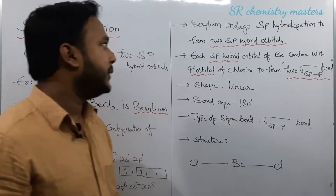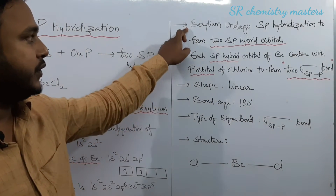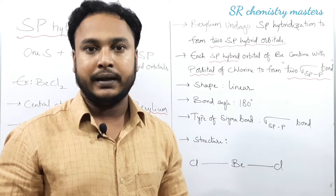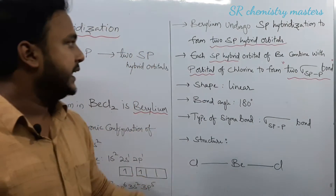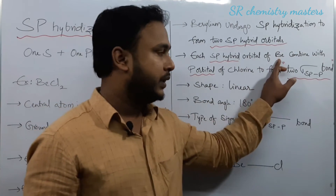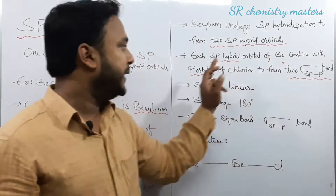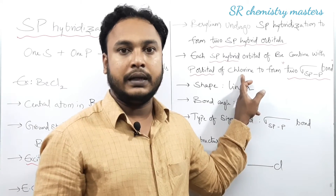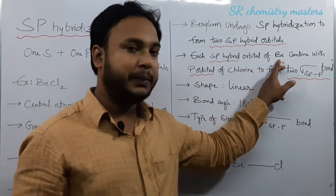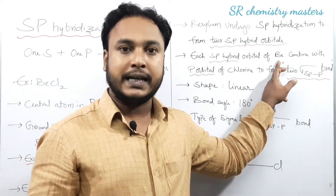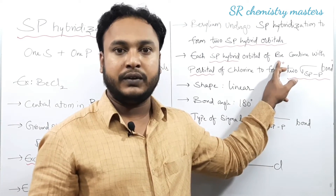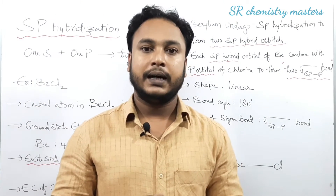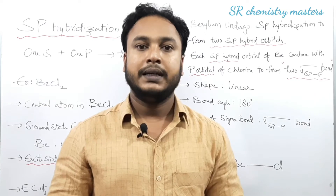Beryllium undergoes SP hybridization and forms two SP hybrid orbitals, each with an unpaired electron. Each SP hybrid orbital of beryllium combines with the p orbital of chlorine, which has an unpaired electron in its p orbital. These SP and p orbitals form sigma bonds — hybrid orbitals always form sigma bonds.